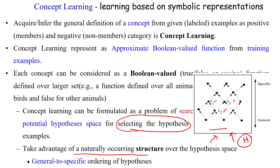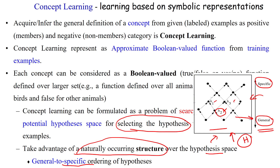We use a naturally occurring structure over the hypothesis space called the general-to-specific ordering. Here H2 is close to the general end, making it a general hypothesis, while H1 and H3 are closer to the specific end compared to H2, making them specific hypotheses. This relationship and ordering — general to specific — is the way to relate general and specific hypotheses using the hypothesis structure.